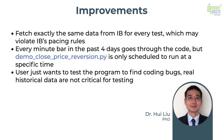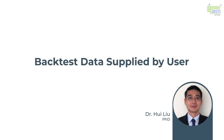Another improvement: sometimes you don't need real historical data. You just want to test your code to find a coding bug, so you really don't need historical data — you just need some random data. To improve performance, what I want to demo is supplying historical data by the user. So we can go to TestMeansDemo2.